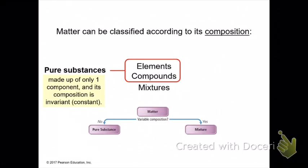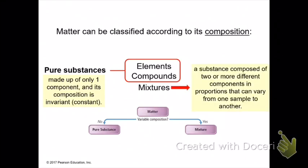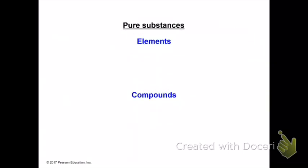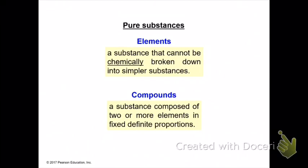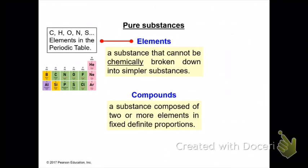A pure substance is made up of a single component, whereas a mixture is composed of multiple different components or substances. There are two types of pure substances: elements and compounds. Elements are substances that cannot be chemically or physically broken down into simpler substances. Compounds are substances composed of multiple different elements that are chemically bonded together in fixed, definite proportions. Examples of elements include carbon, hydrogen, and oxygen; examples of compounds include water, sugar, salt, and alcohols.